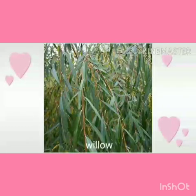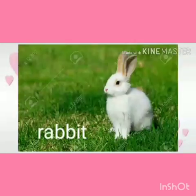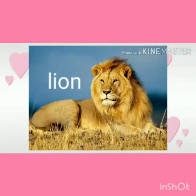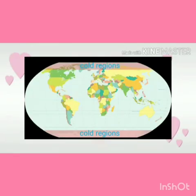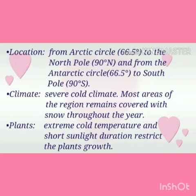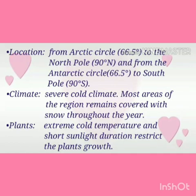A number of animal species such as deer, bear, rabbit, squirrel, lion, zebra and fox are also found here. The third one is cold regions. Location: this region is located from the Arctic Circle at 66.5 degrees to the North Pole at 90 degrees north, and from the Antarctic Circle at 66.5 degrees to the South Pole at 90 degrees south. Climate: this region is marked with severe cold climate and most areas remain snow covered throughout the year. The extreme cold temperature and short duration of sunlight restrict plant growth.